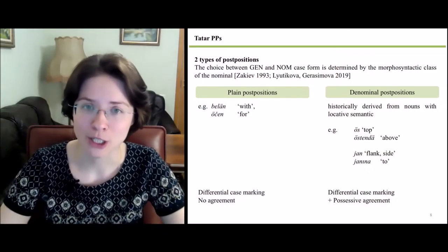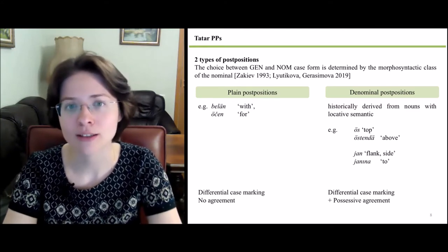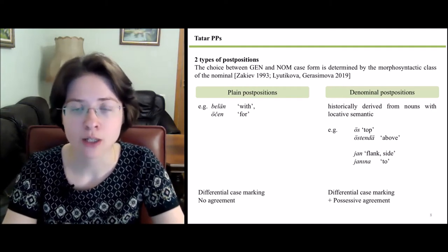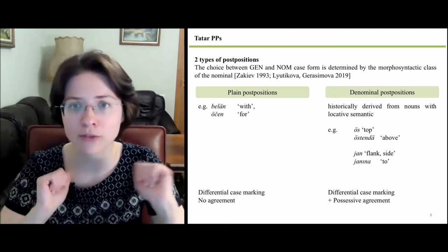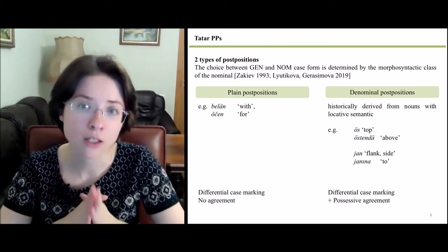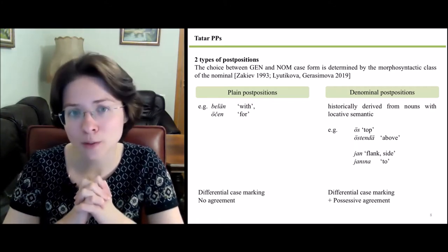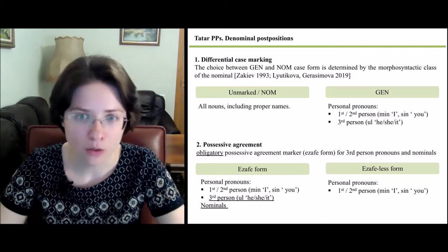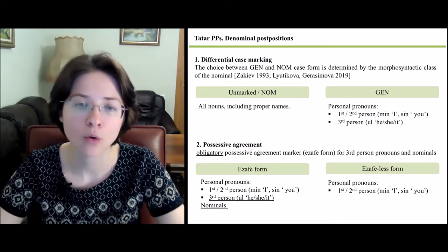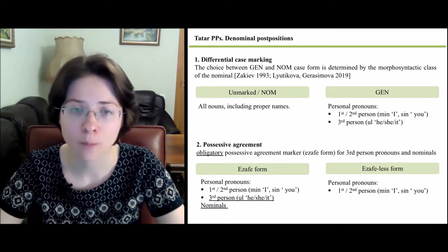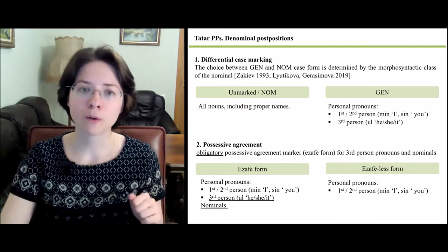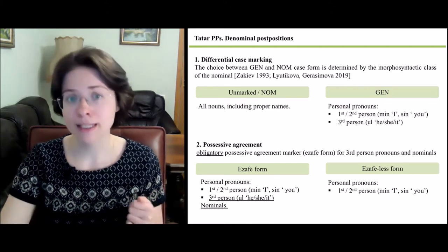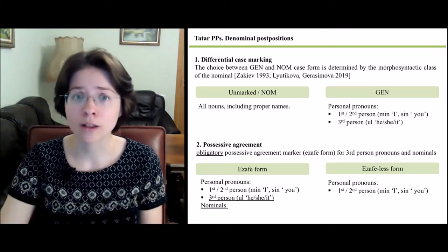Tatar has two types of postpositions: plain postpositions and denominal ones, those historically derived from nouns with locative semantics. Postpositional phrases with both types demonstrate differential case marking. The choice between genitive and nominative case form is determined by the morphosyntactic class of the nominal. However, unlike plain postpositions, denominal postpositions also show possessive agreement with the complement nominal. All nouns, including proper names, are used in unmarked nominative form, while personal pronouns are marked genitive. A possessive agreement marker or isafi form is obligatory for third-person pronouns and nominals, and the isafi-less form is allowed for personal pronouns, though they can also appear with the isafi form.